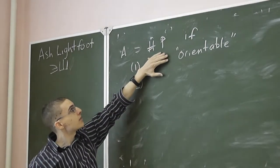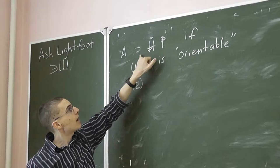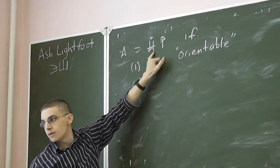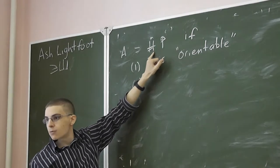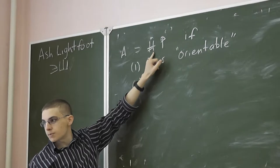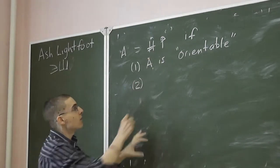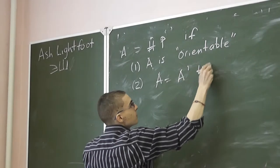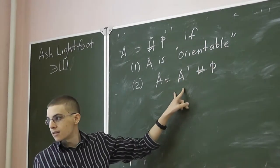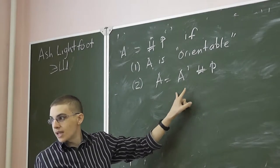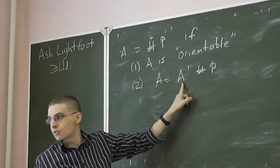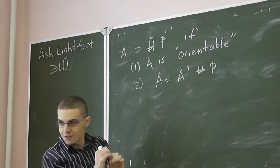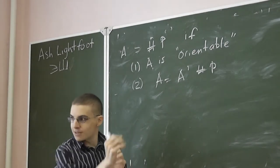Before we thought about orientability, how did we recognize if we knew that our connect sum would be made of projective planes? If we had a connect sum of any projective plane, what must we get in the end? If A is a connect sum of something with a projective plane, we must get a projective plane — because any torus gets swallowed up, it gets converted into projective planes. We put in a torus and a projective plane, we get a bunch of projective planes.